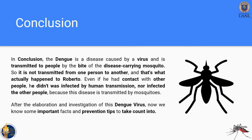In conclusion, dengue is a disease caused by a virus and transmitted by the bite of a disease-carrying mosquito. It is not transmitted from person to person — that is what actually happened to Roberto. Even though Roberto had contact with other people, he did not infect others, because the disease is transmitted only by mosquitoes. His friends could potentially also be infected if they were bitten by the same mosquito.